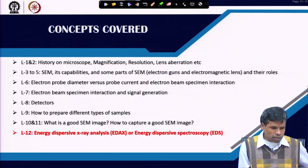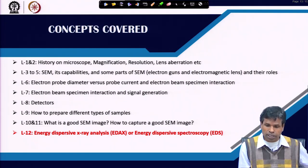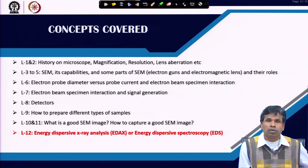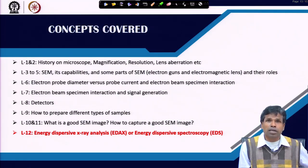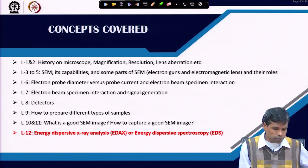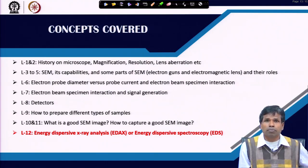In particular we have talked about magnification, resolution, lens separation, electron guns, electromagnetic lenses and their roles, electron probe diameter versus probe current, and how the electron beam interacts with the specimen. We have discussed signal generation, detectors, sample preparation, and what constitutes a good SEM image.